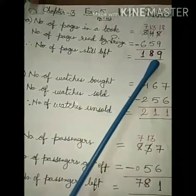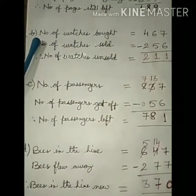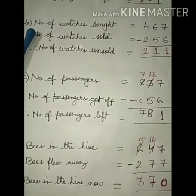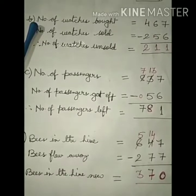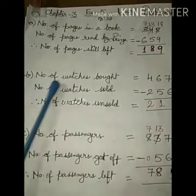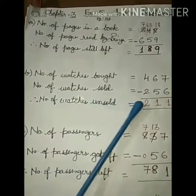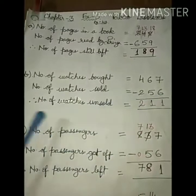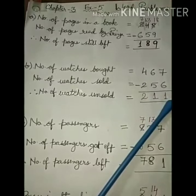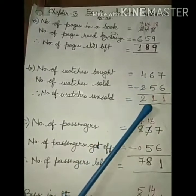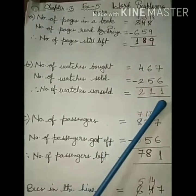Next question B: Maya bought 467 watches. She sold 256 watches. How many watches were left unsold? Answer: Number of watches bought: 467. Number of watches sold: 256. So number of watches unsold. Subtract: 7 minus 6 is 1, 6 minus 5 is 1, 4 minus 2 is 2. So what is unsold? 211.